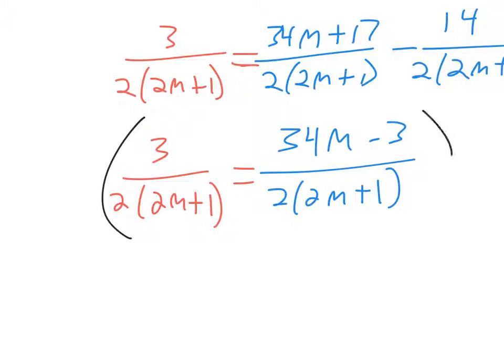Or you can think of it like this. Multiply both sides by 2, parentheses 2m plus 1, because that's a fair thing to do if you multiply this to every term.